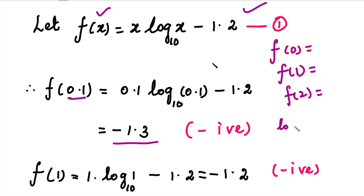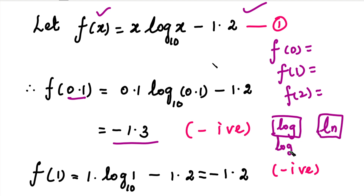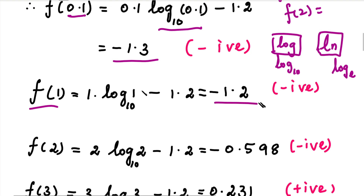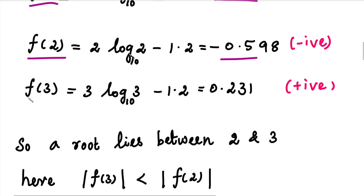In the calculator, there is a log button. This function of log is log base 10. So we use log base 10. Press log, then 0.1, and this value is negative. Add the value of x as 1; f(1) value is negative, that is minus 1.2. The value of f(2) is minus 0.598, which is negative.